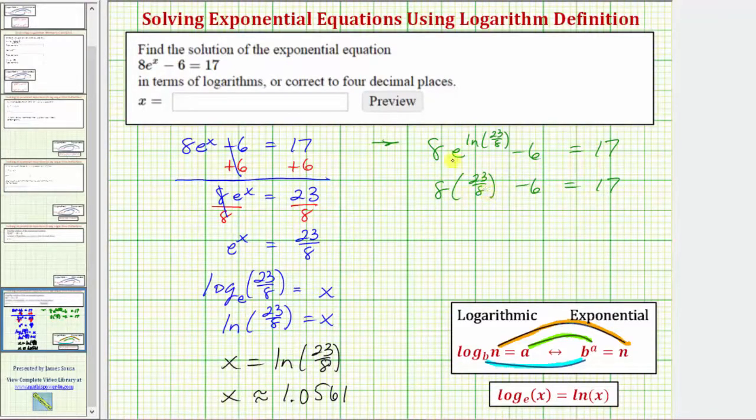Multiplying, as a fraction, 8 is 8/1. 8/8 simplifies to 1, so we have 23 - 6 = 17, which is true. Let's also check this using the calculator by entering the left side of the equation to make sure it equals 17.